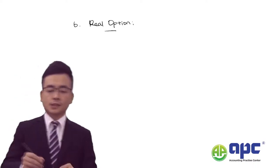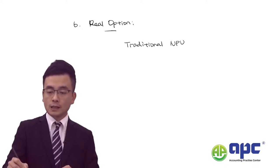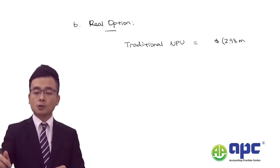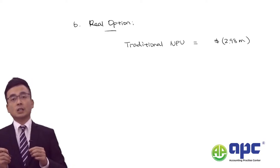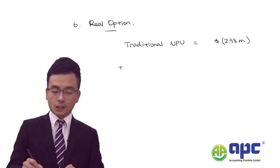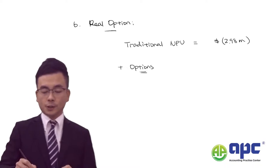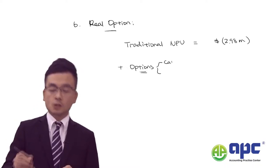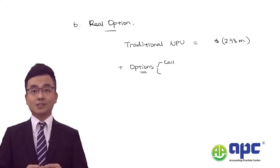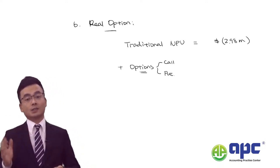Let's say the traditional NPV value of the project is negative $2.98 million, meaning if you proceed with that project, you will end up in a loss-making position. Therefore, we need to consider whether there will be additional option value. The option value can either be a call option (option to expand, i.e., carry on the project with additional investment) or a put option (option to sell, meaning we can abandon the project).